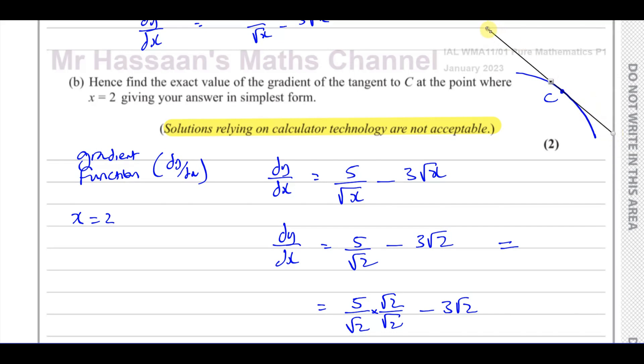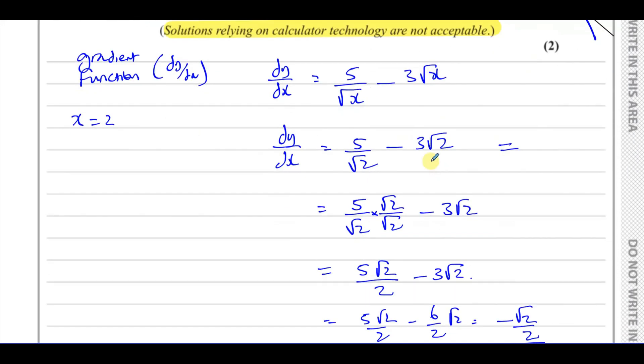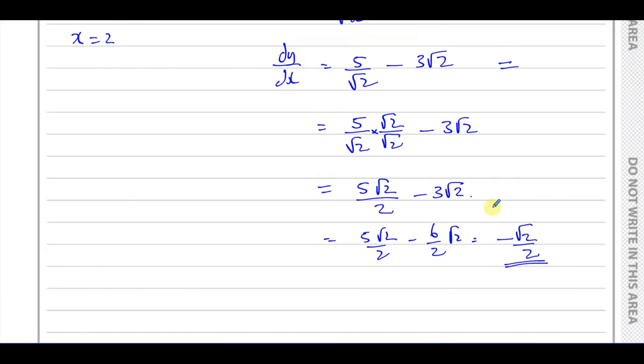So the tangent would just touch the curve at that particular point when x equals 2. And what we found here now is the gradient when x equals 2. So let's say this is where x equals 2. So the gradient of the curve when x equals 2 is the same as the gradient of the tangent when x equals 2. So that's what we basically did here. So we know that the tangent of the curve shares the gradient, shares the same gradient as the curve at the point where the tangent touched the curve.